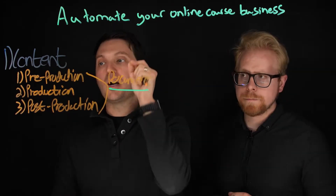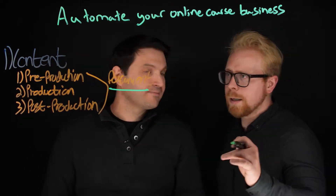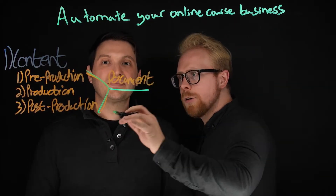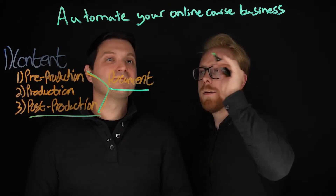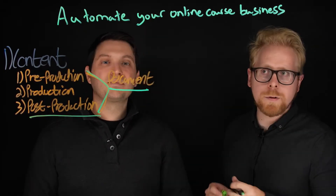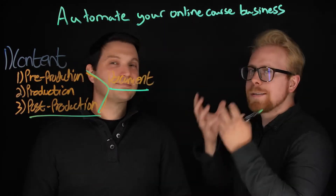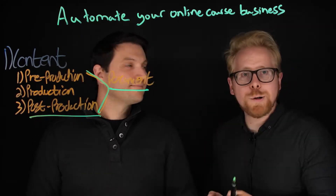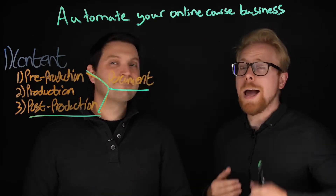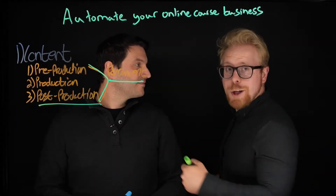The easiest of these three to outsource is going to be post-production. For pre-production and production, you'll probably have to be involved to some degree, but you won't have to spend as much time on the second, third, fourth, or fifth course after you've automated the heck out of that first one and sold the crap out of it.